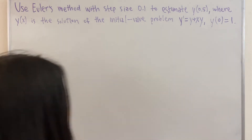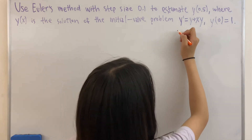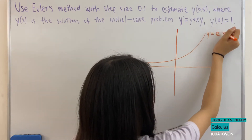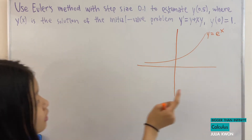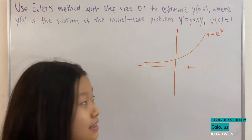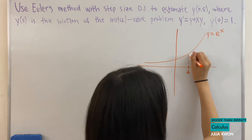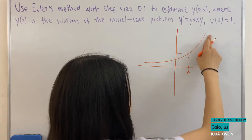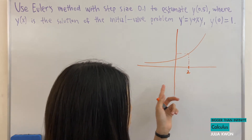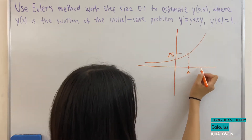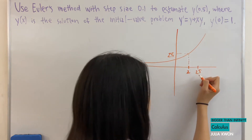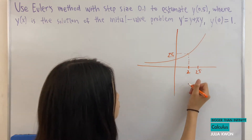First, I'll explain what Euler's method is. If we have the graph of y = e^x, for example — this is just an example to show what Euler's method is — if I know the y value at x = 2, let's say it is 2.5, and we're trying to find the y value at x = 2.5 and approximate it using Euler's method with step size 0.5...